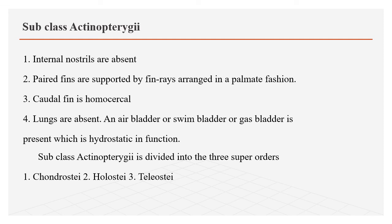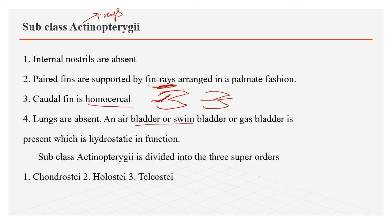Coming to subclass Actinopterygii — 'actino' means rays, so the fins are ray-like. Internal nostrils are absent. Paired fins are supported by fin rays made up of either cartilage or bone. The caudal fin is homocercal — symmetrical externally, but internally there is no symmetry because the backbone extends into one lobe of the caudal fin.